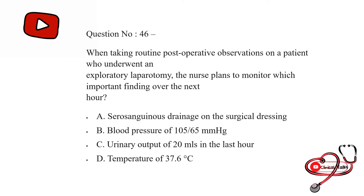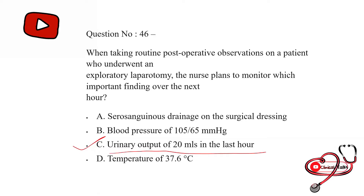When taking routine postoperative observations on a patient who underwent an exploratory laparotomy, the nurse plans to monitor which of the following important findings over the next hours. Option first: serosanguinous drainage on the surgical dressing; second: blood pressure of 105/65 mmHg; third: urine output of 20 ml in the last hour; last: temperature of 36 degrees Celsius. The correct answer is C — monitor the urine output for better perfusion.